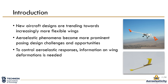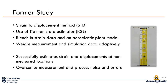For that, information on the wing deformation is needed during flight. A former study, which was presented at SiteTech 2022, proposed a strain-to-displacement method that blends strain data and an aeroelastic plant model. The method was demonstrated with a wind tunnel model. A Kalman state estimator was used to adaptively weight measurement and simulation data to estimate strain and displacement at non-measured locations, clear out noise influence, and overcome measurement errors.